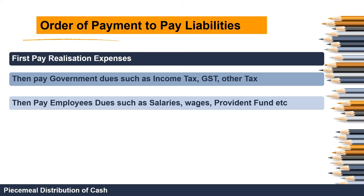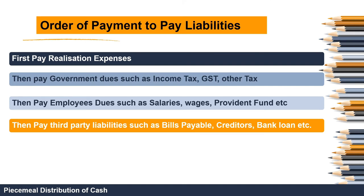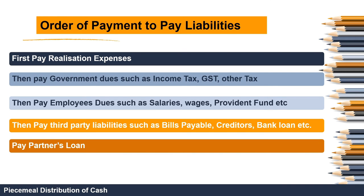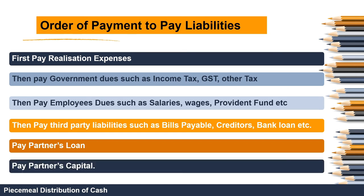First we pay realization expenses, then government dues, then employees' dues, then external liabilities — also called third-party liabilities — such as bills payable, creditors, and loans. After settling external liabilities, we pay partners' loans, which are internal liabilities. Finally, the remaining cash is distributed to partners' capital. Any shortfall is a loss on realization; any excess is profit on realization.